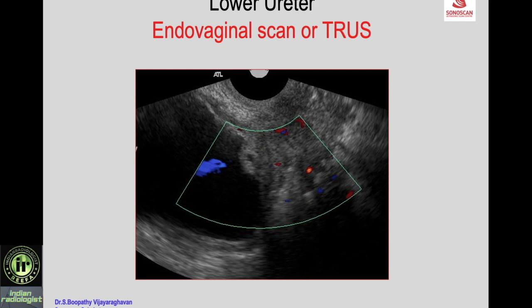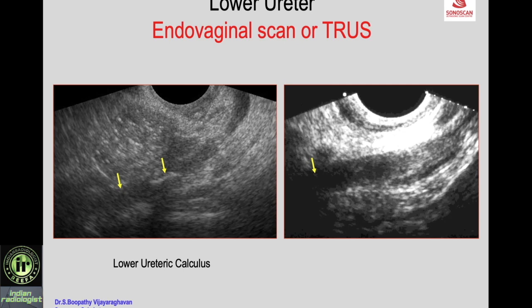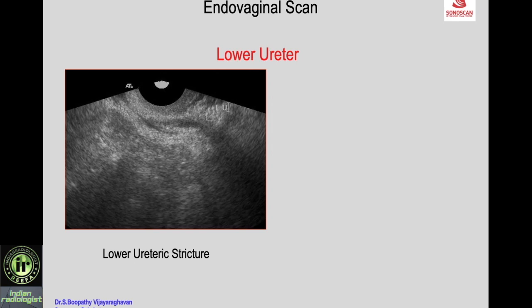Endovaginal scan in a lady and transrectal scan in unmarried women and males can be used to our advantage to look at the distal-most part of the ureter when it is not well seen on abdominal scan, and to identify the UVJ by the jet. Here you see the endovaginal scan showing the distal-most ureter, slightly dilated, with a calculus better seen. Another example shows a slightly dilated distal-most ureter where obstruction is due to a sloughed papilla in a diabetic patient.